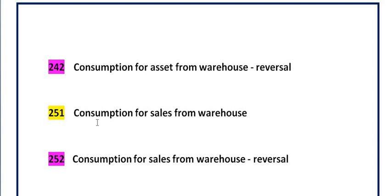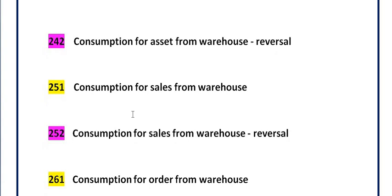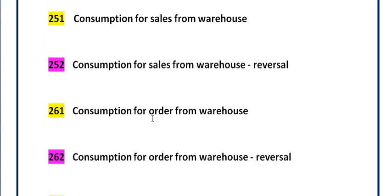Movement type 251 is consumption for sales from the warehouse. For example, if you have inventory which you are going to sell from your company, movement type 251 is used. Based on the movement type you can easily track inventory records: which is used in maintenance, against capital projects, direct cost center consumption, sales, or direct asset capitalization. Movement type 252 is the reversal of movement type 251.